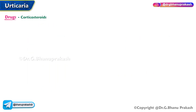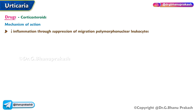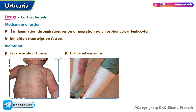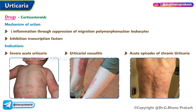Corticosteroids mechanism of action: corticosteroids decrease inflammation through suppression of the migration of polymorphonuclear leukocytes and inhibition of transcription factors. Indications include severe acute urticaria, urticarial vasculitis, and acute episodes of chronic urticaria.